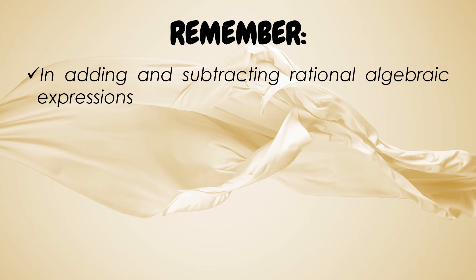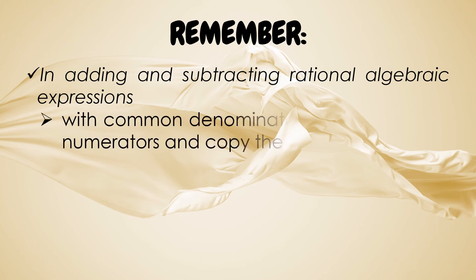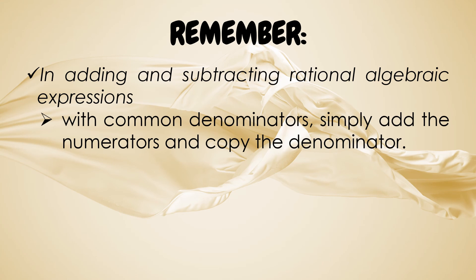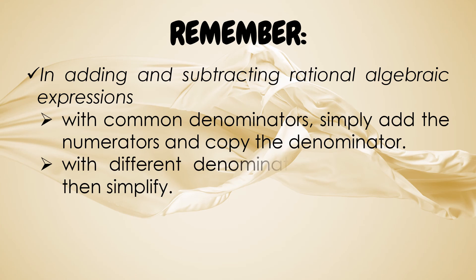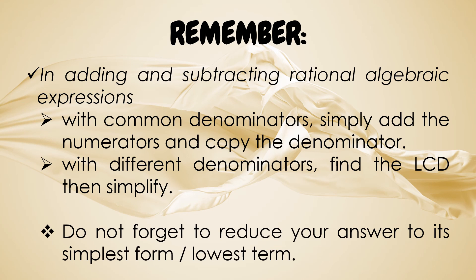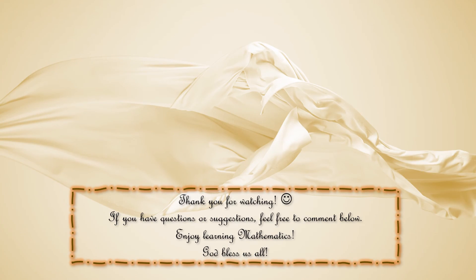Let us now summarize what we have learned in this lesson. In adding and subtracting rational algebraic expressions with common denominators, simply add the numerators and copy the denominator. But if we add or subtract rational algebraic expressions with different denominators, we need first to find the LCD, then simplify. Do not forget to reduce your answer to its simplest form or lowest term. Thank you for watching! If you have questions or suggestions, feel free to comment below. Enjoy learning mathematics. God bless us all.